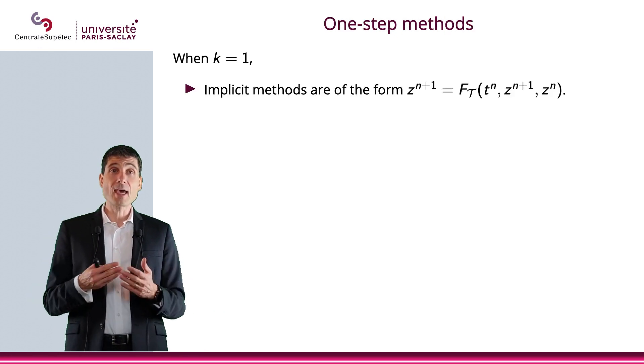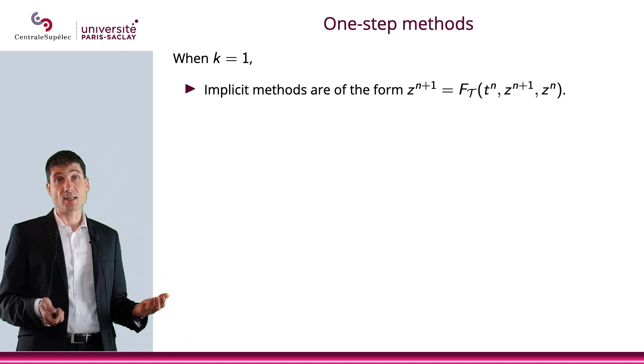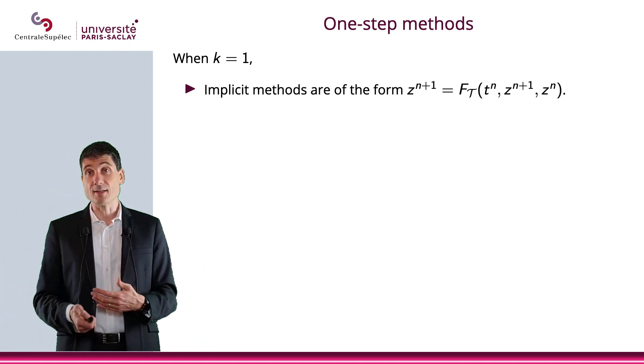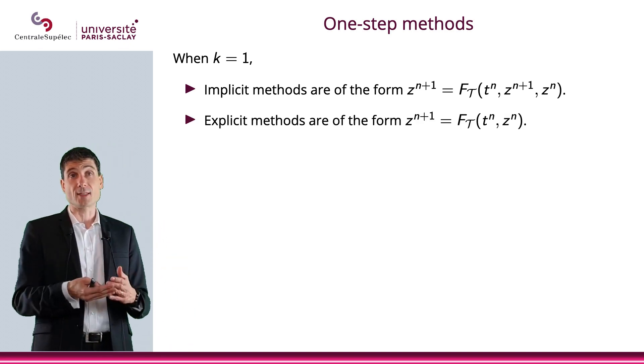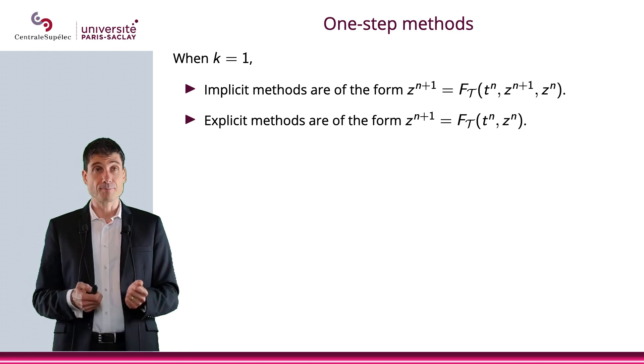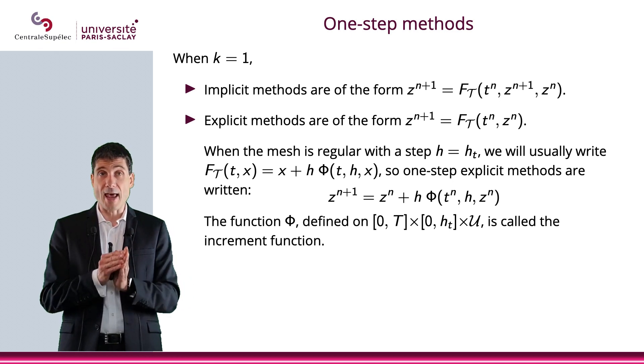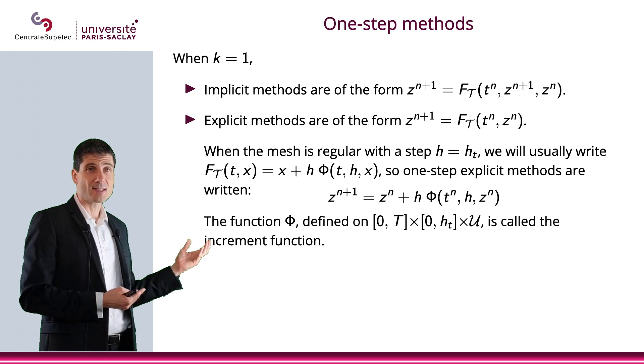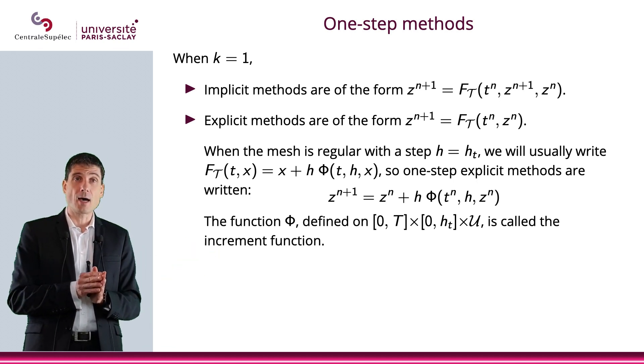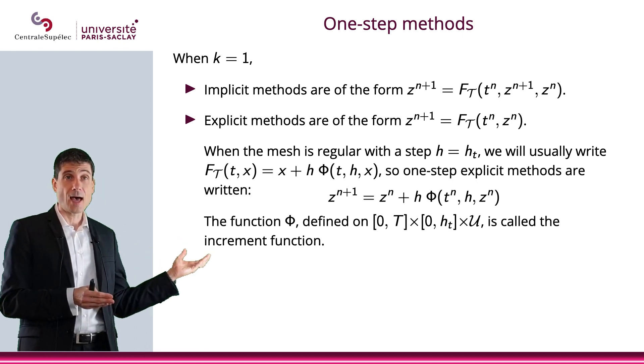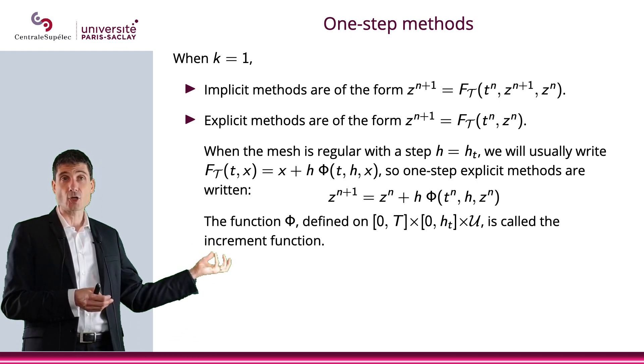When k = 1, implicit methods are of the form z^{n+1} = F_T(t^n, z^{n+1}, z^n), and explicit methods are of the form z^{n+1} = F_T(t^n, z^n). When the mesh is regular with a constant step h, we can write F_T(t, x) = x + h·φ(t, h, x). So for a one-step explicit method, we have z^{n+1} = z^n + h·φ(t^n, h, z^n).